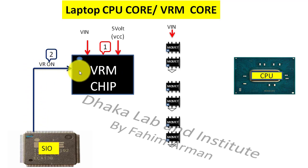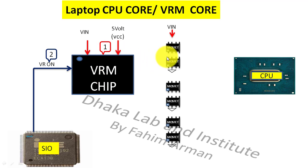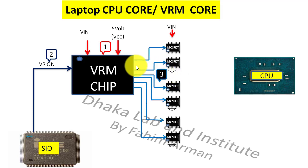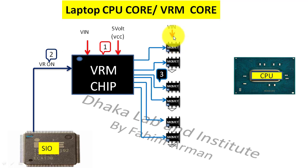Then the VRM chip will get the voltages and signal, and then the VRM chip will provide a signal for switching these MOSFETs at their gates. The VRM chip is actually switching these MOSFETs, and all the MOSFETs are ready to perform.